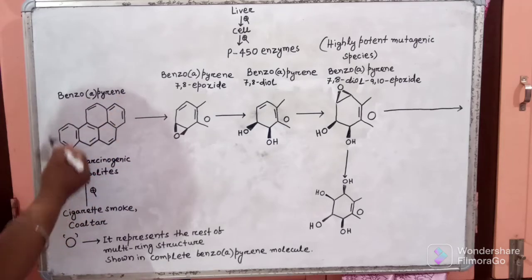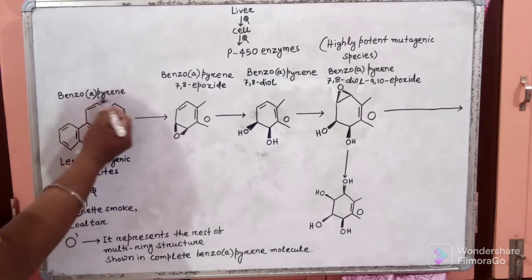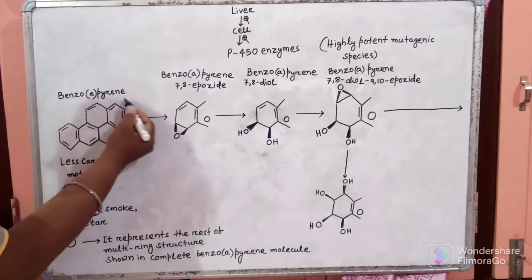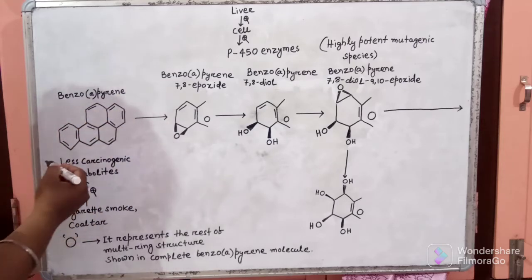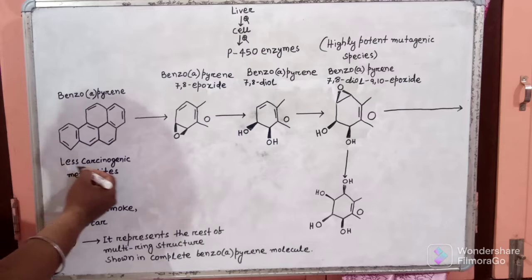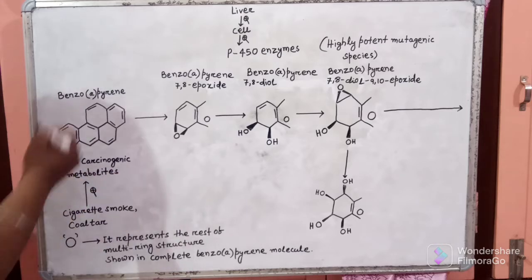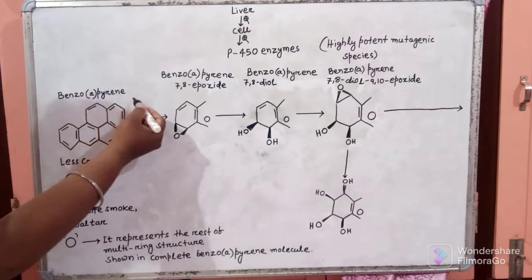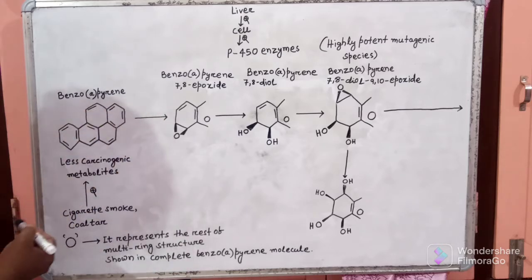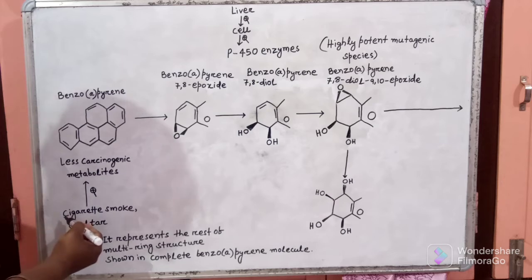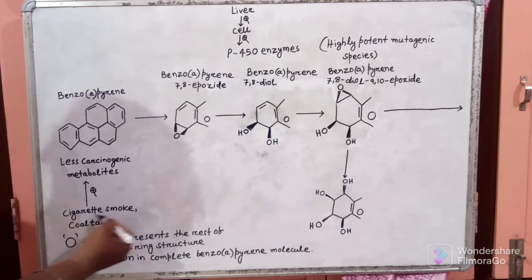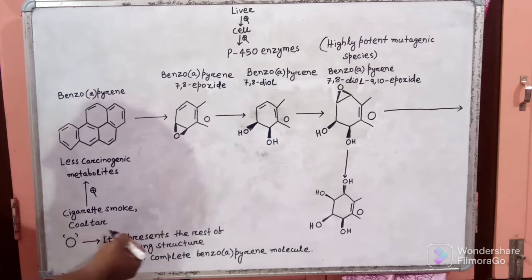This is the structure of Benzo A Pyrene. This is a less carcinogenic metabolite. Benzo A Pyrene is present in cigarette smoke and coal tar.